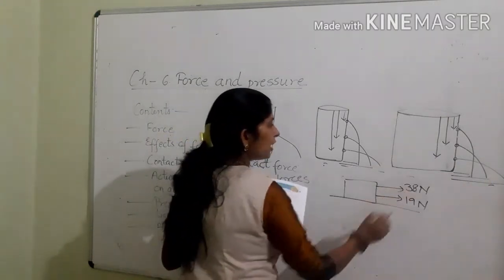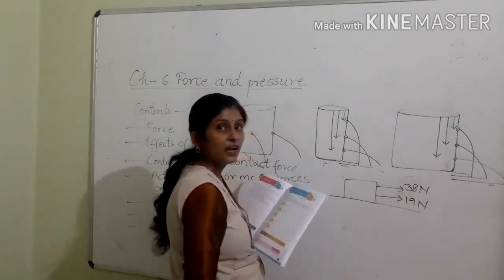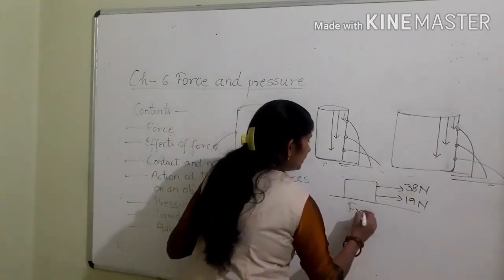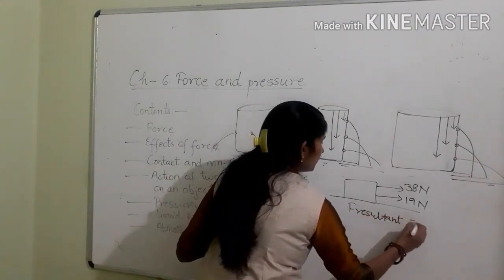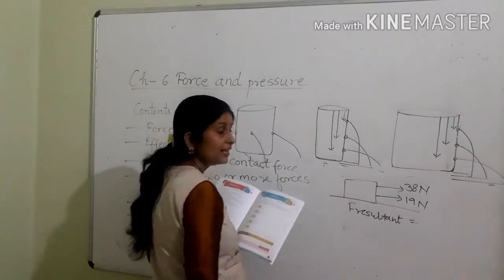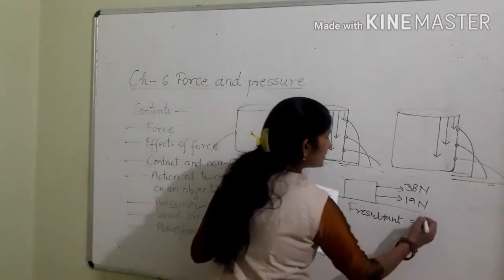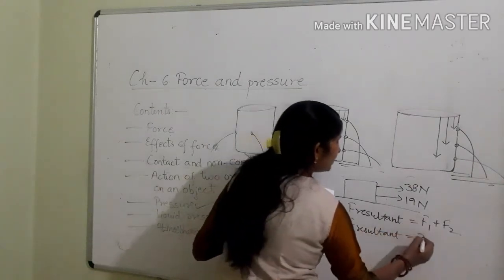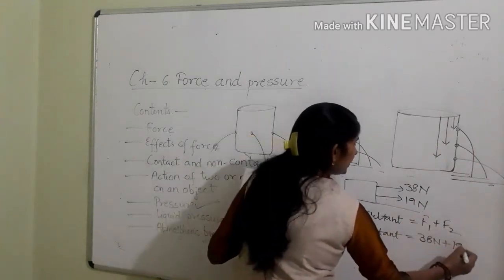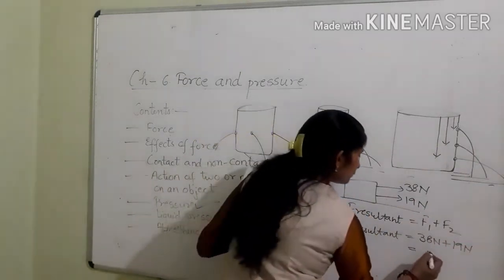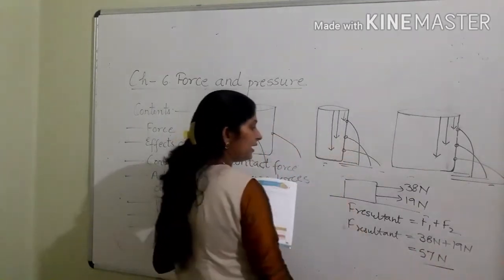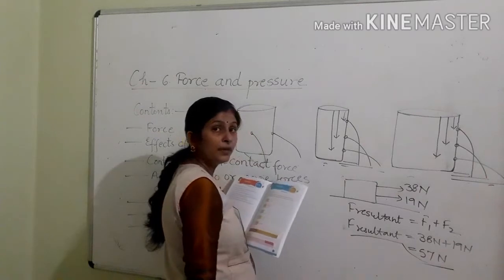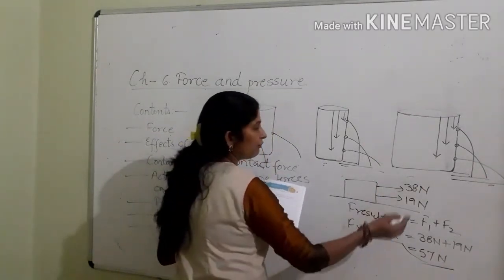In the second part, two unequal forces of 38 Newton and 19 Newton are acting on the same object in the same direction. The net resultant force acting on the object is the sum of these forces. F resultant equals F1 plus F2, that is 38 Newton plus 19 Newton, which equals 57 Newton. The direction of this net resultant force is the same direction as F1 and F2.